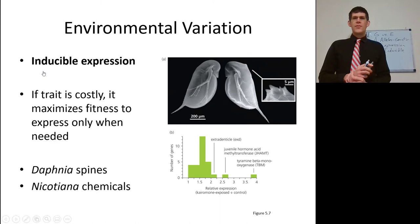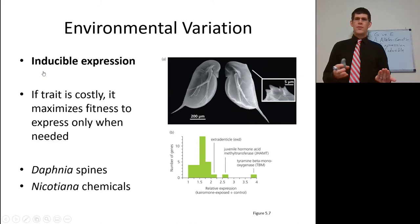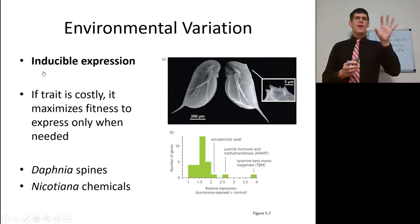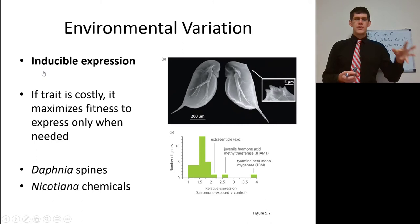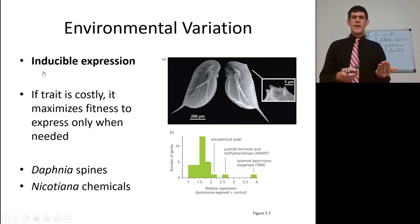In Daphnia, spines on their back make them harder for predators to grasp. But these spines are costly in terms of mobility and resources. So a Daphnia will not grow spines unless predators are present. How does a Daphnia know predators are present? It senses them by chemicals in the water. These chemicals cause certain proteins to bind to the expression-specific areas of the DNA, which causes expression of the gene for spines — only when predator chemicals are present. These spines are what's called an inducible gene.